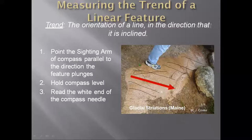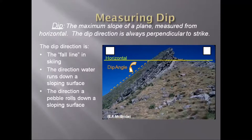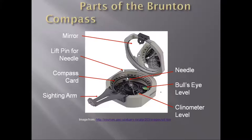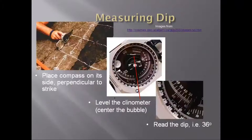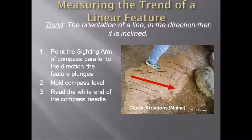We use the sighting arm of the Brunton. The sighting arm is this one. What we do is we just make it parallel to the direction of the feature. So just place the Brunton here, and the sighting arm of the Brunton — we make it parallel to the direction of the feature.